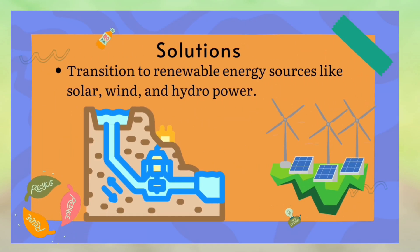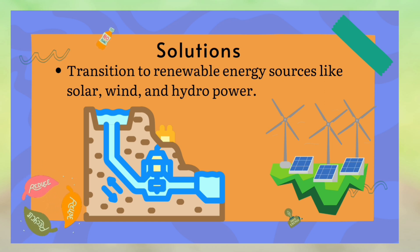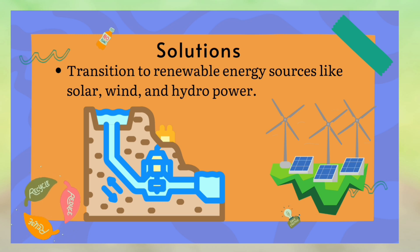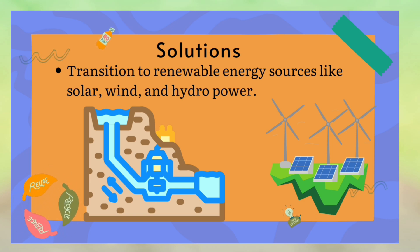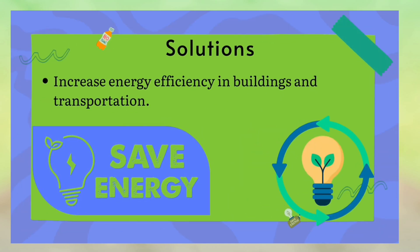Transition to renewable energy sources like solar, wind, and hydropower. You can switch to renewable sources and install solar panels on your roof to generate energy for your home. Increase energy efficiency in buildings and transportation.